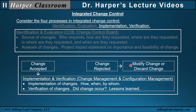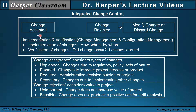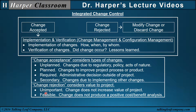If a change is rejected, it can either be modified or totally discarded. When a change is accepted, it may be unplanned acceptance (changes due to regulatory, policy, or acts of nature that are unexpected), planned (changes to improve project process or product), or required changes (administrative decisions outside the project or secondary changes). Secondary changes occur because implementing one change can require a change in another part of the project. If a change is rejected, it is because it is unimportant (does not increase project value) or not feasible (does not produce a positive cost-benefit analysis).